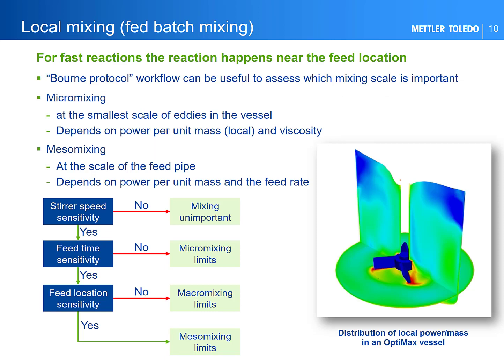If you have a fed-batch reaction where the reactions are much faster than mixing, then the local mixing around the feed point is important. There are a range of different mixing scales and their importance can be assessed with a few key experiments — this is also known as the Bourne Protocol. Micromixing and mesomixing both depend on the power per unit mass around the feed point. This CFD image shows that the local power per unit mass is far from uniform, with high values indicated in red near the impeller and low values in blue near the top of the tank. The power per unit mass at the impeller can be 20 to 100 times that near the top of the vessel.